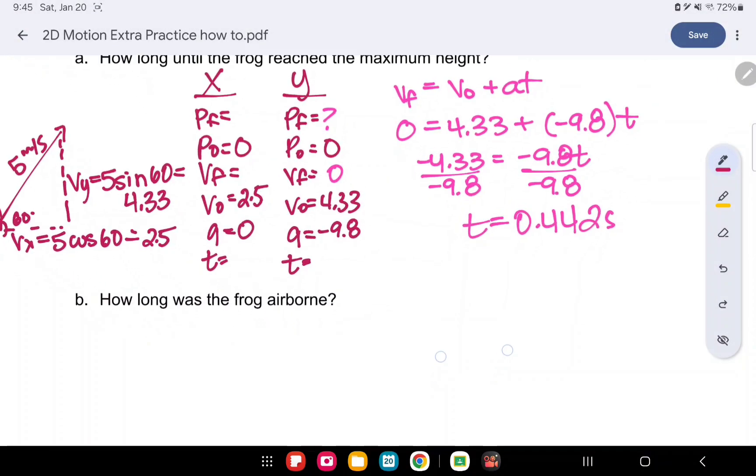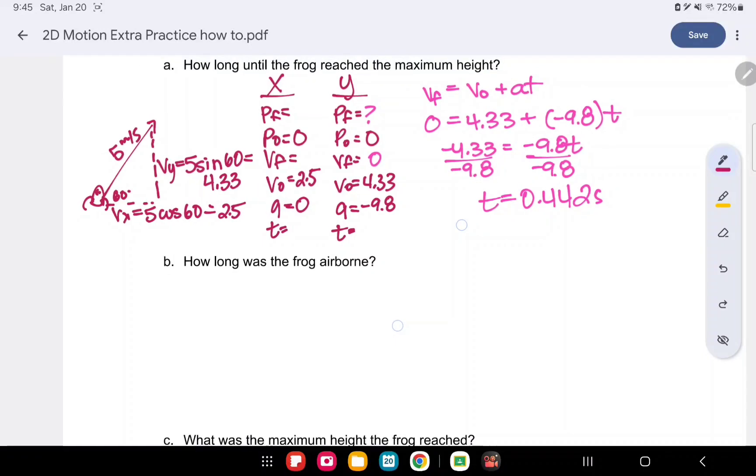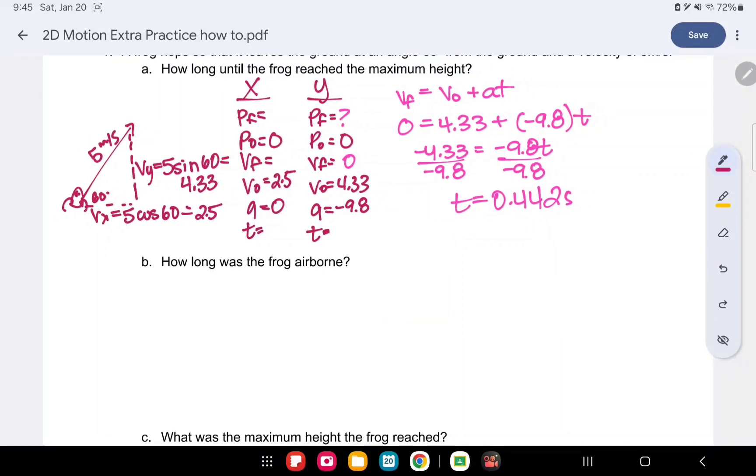How long was the frog airborne? So now we're trying to find the time from x to xf. So if we are going to do this one, I'm just going to zoom out a bit. We need to know the time in the x equation. So really we don't need to use any of the velocity or the position equations. Because we know that the frog went up to here in 0.442 seconds. Meaning it's also going to take 0.442 seconds to go back down. So we can just multiply time twice. So we do 0.442 times 2 equals 0.884 seconds.